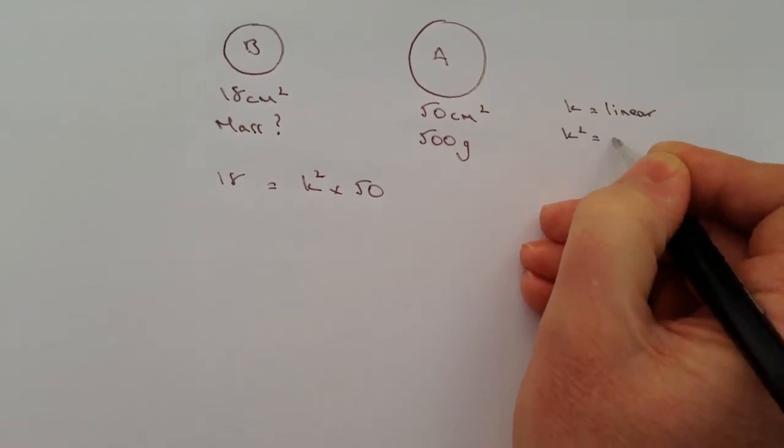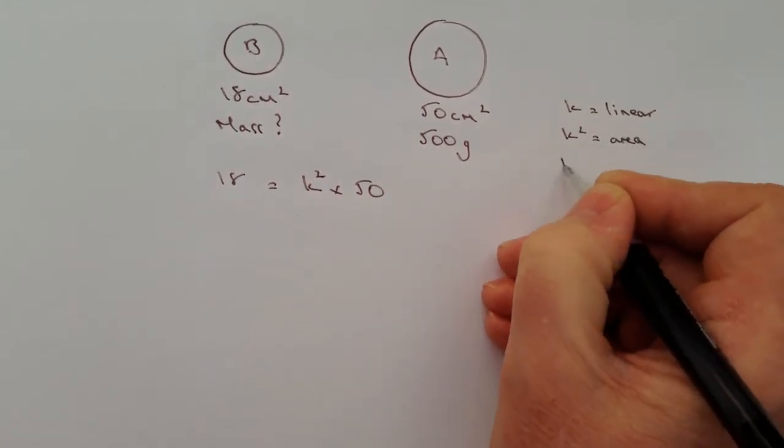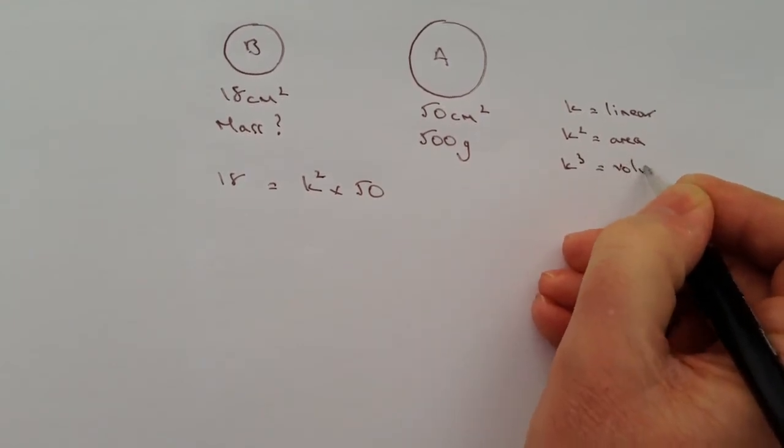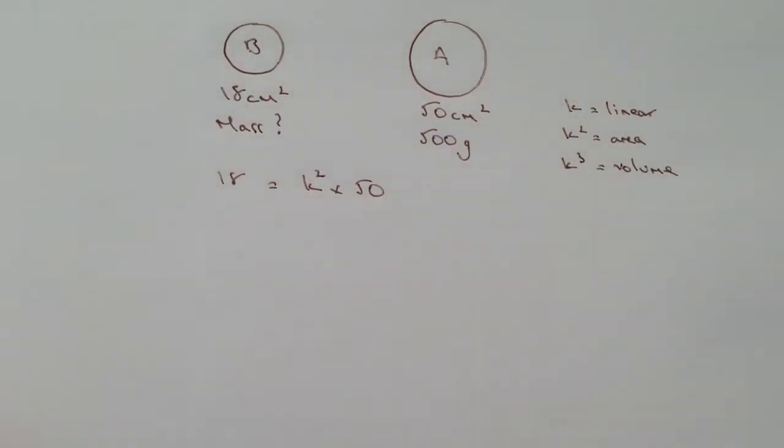K squared is going to be an area relationship and K cubed is going to be a volume or a mass relationship and those we're going to be using a little bit later on in this particular video.